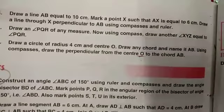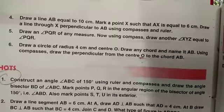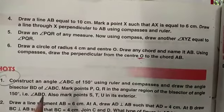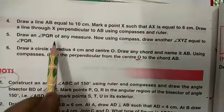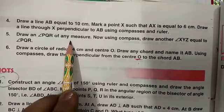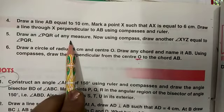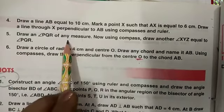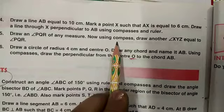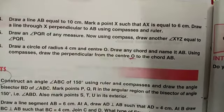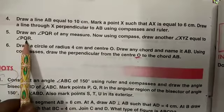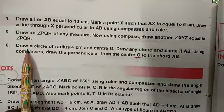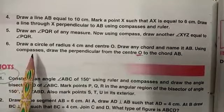Now question number 5. Draw an angle PQR of any measure. Using compass, draw another angle XYZ equal to angle PQR. PQR of any measure, it's your choice. Using protractor, you can draw any angle. Now we will copy this angle using compass. That concept we have already discussed in our worksheet number 2. So again, you are supposed to do this question yourself.